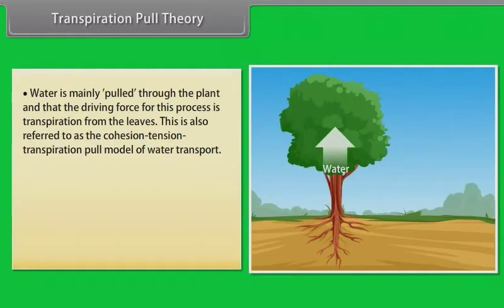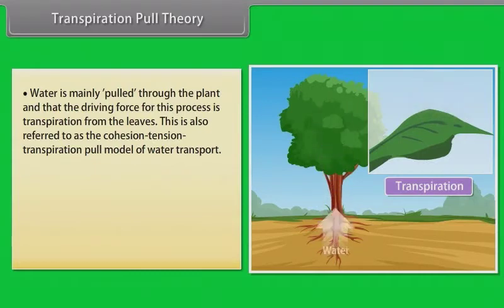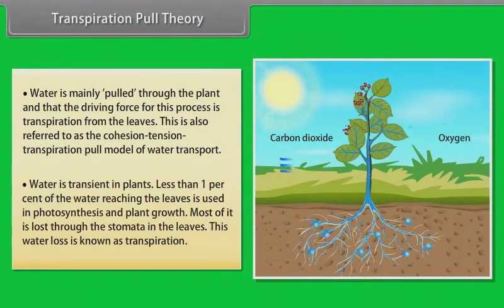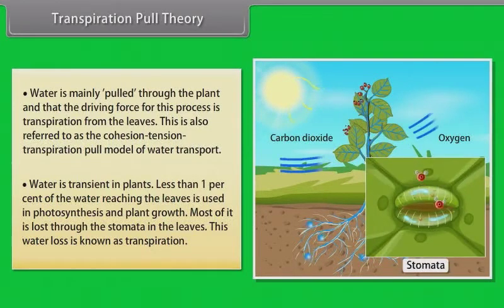In transpiration pull theory, most researchers agree that water is mainly pulled through the plant and that the driving force for this process is transpiration from the leaves. This is also referred to as the cohesion-tension-transpiration pull model of water transport. Water is transient in plants — less than 1% of the water reaching the leaves is used in photosynthesis and plant growth; most of it is lost through the stomata in the leaves, and this water loss is known as transpiration.